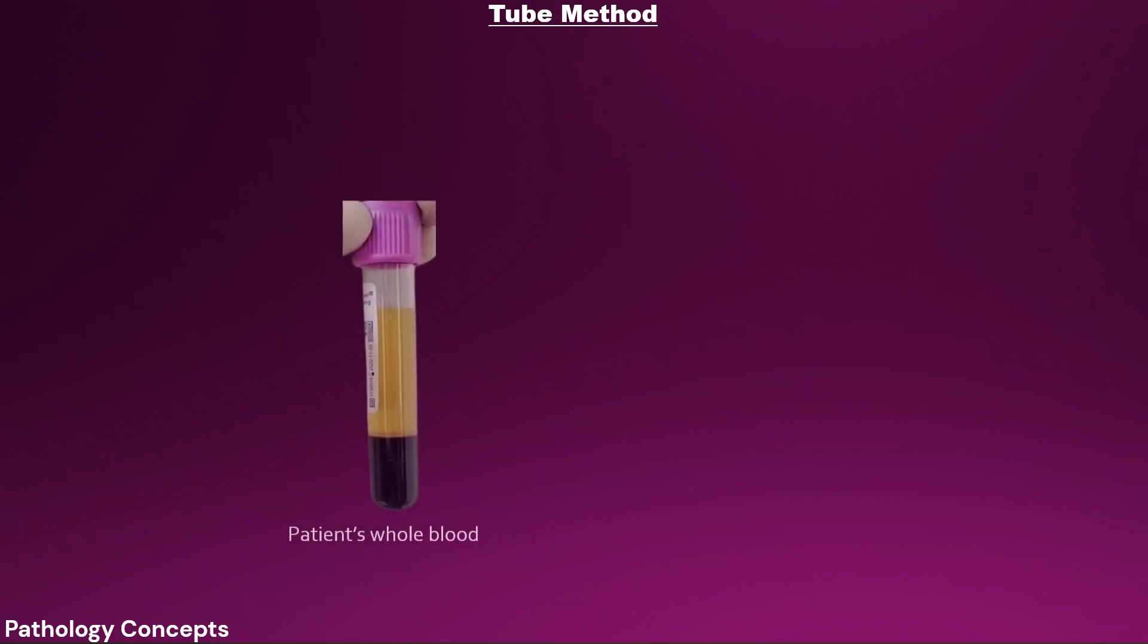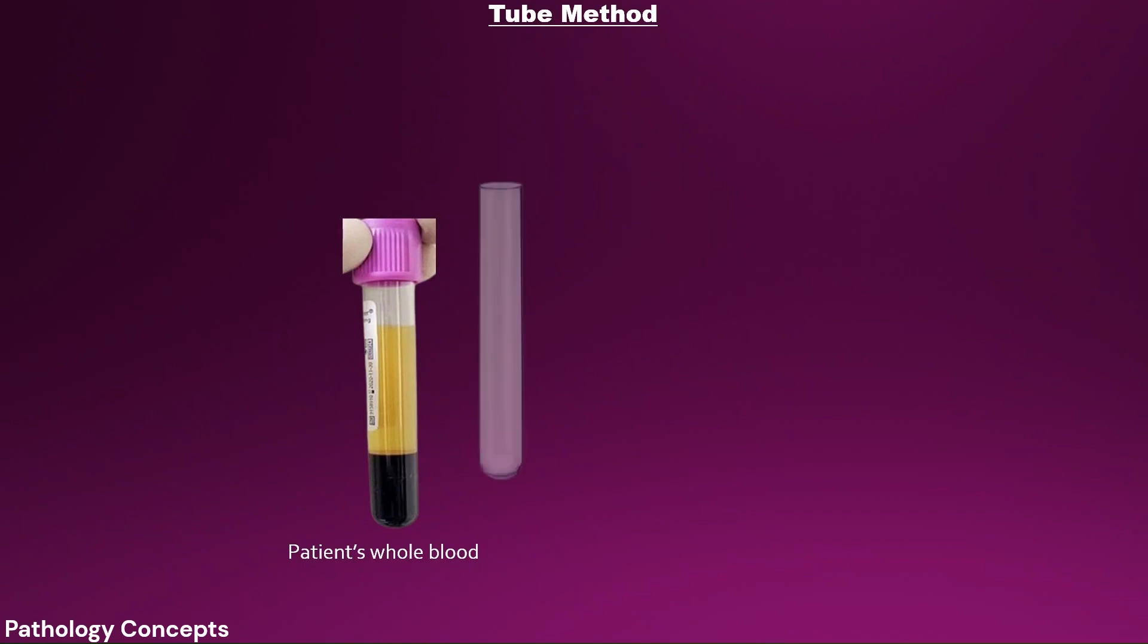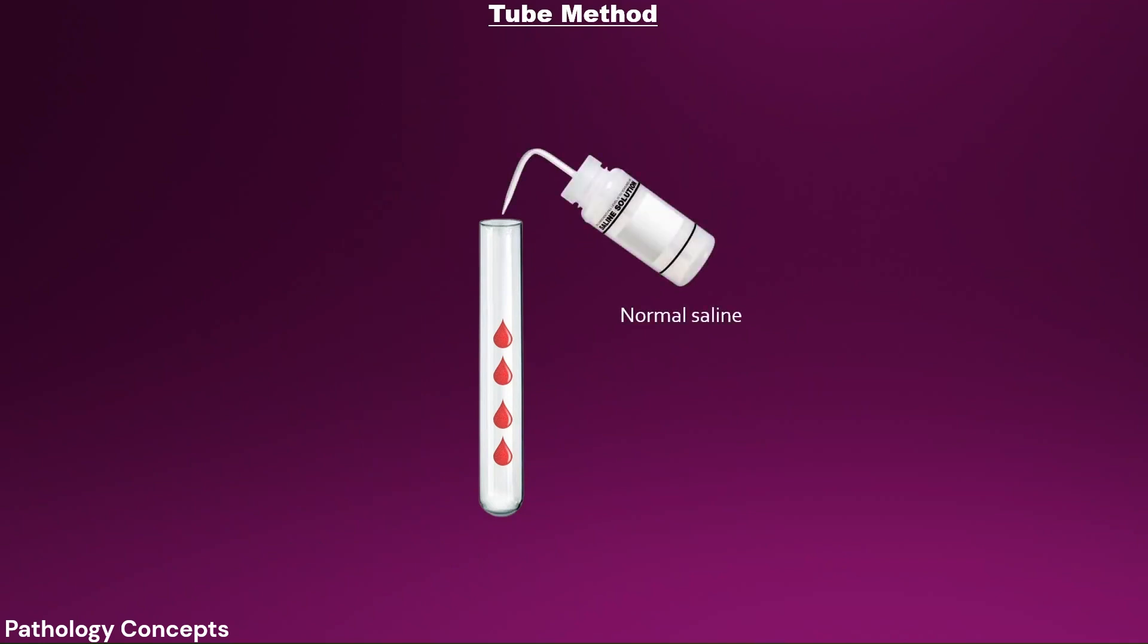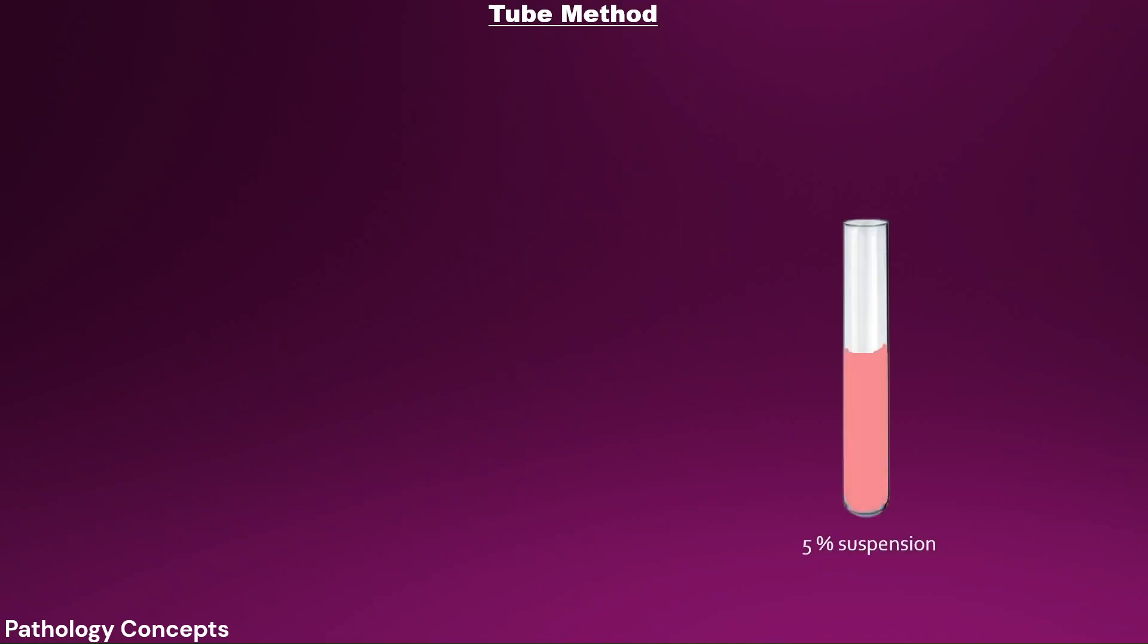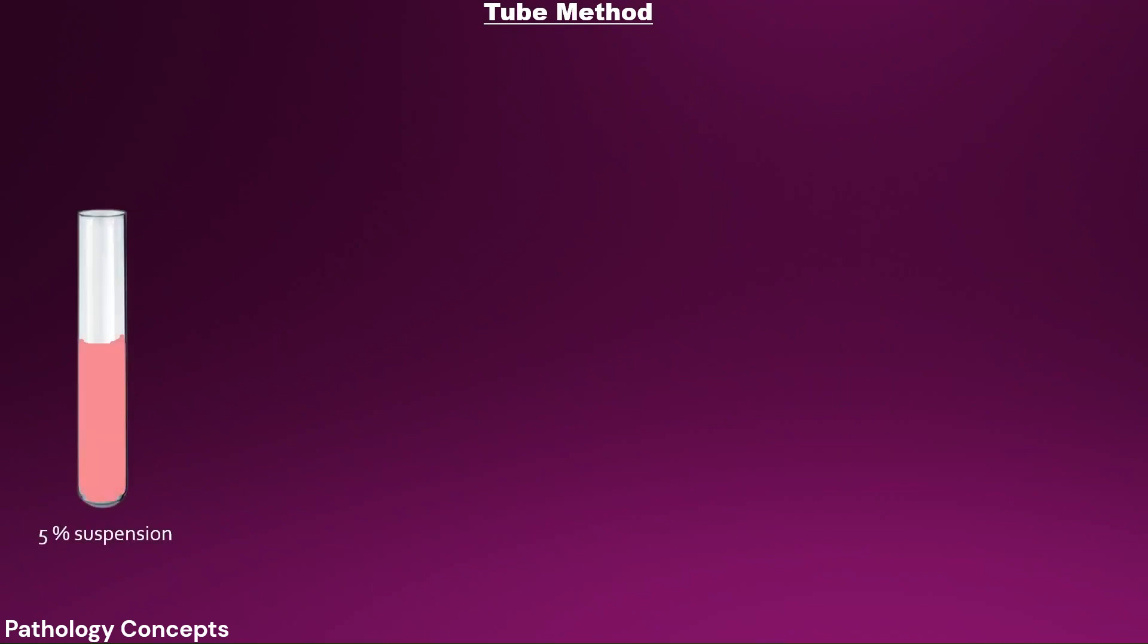Now let's understand the tube method. First, take patient's EDTA whole blood for grouping, then take a simple test tube. Add 4 to 5 drops of the whole blood from the patient serum into the test tube. Add normal saline for washing. Wash three times and prepare 5% suspension.